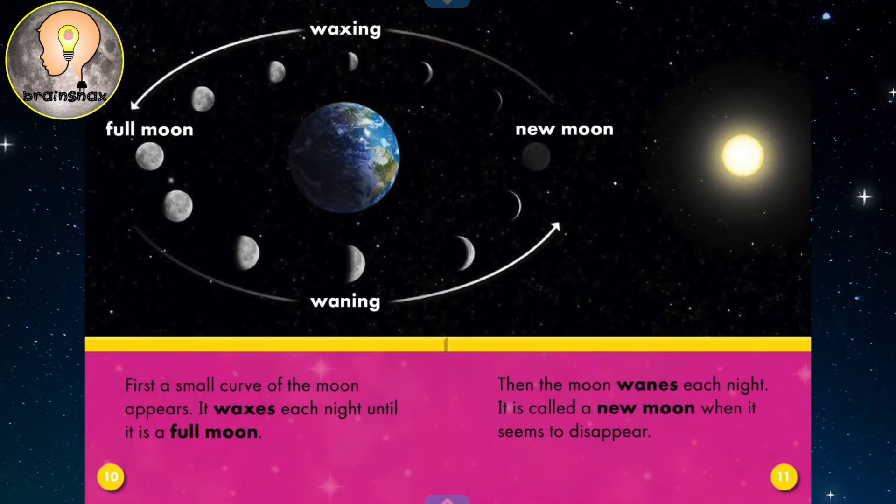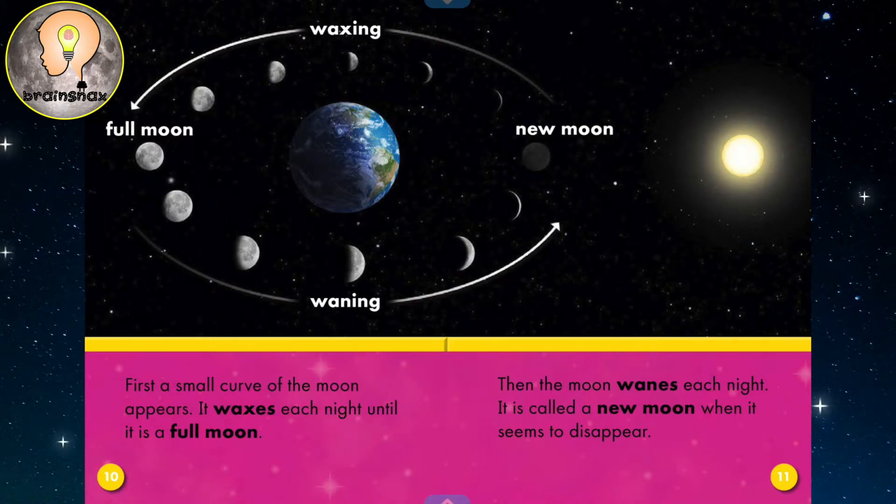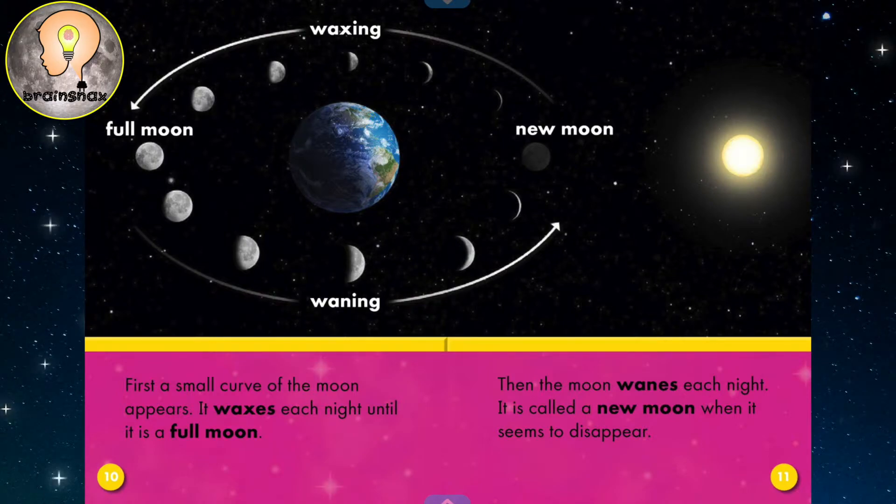First, a small curve of the moon appears. That's a crescent moon. It waxes each night until it is a full moon. So waxes is a waxing moon, and waxing basically just means getting bigger.